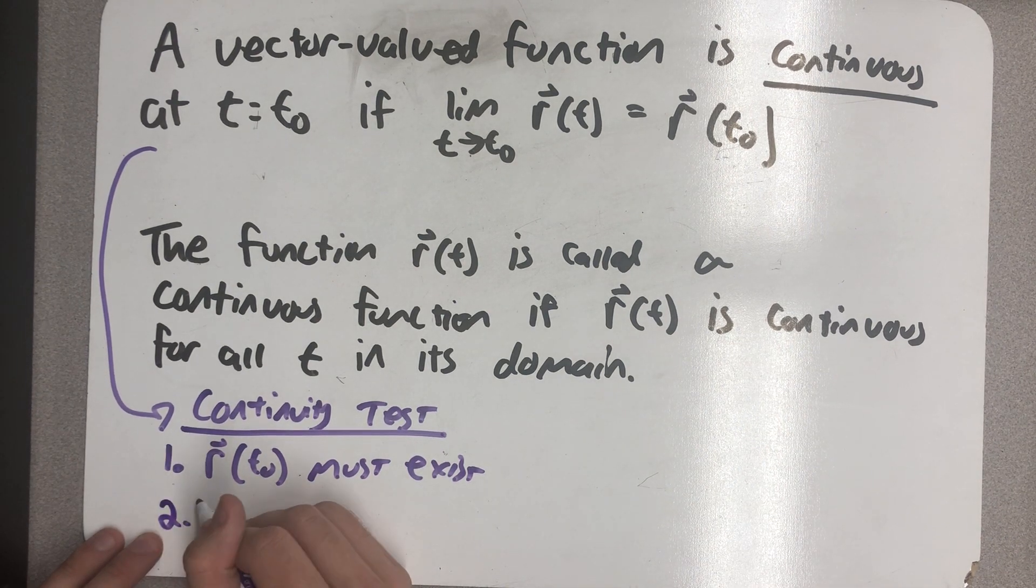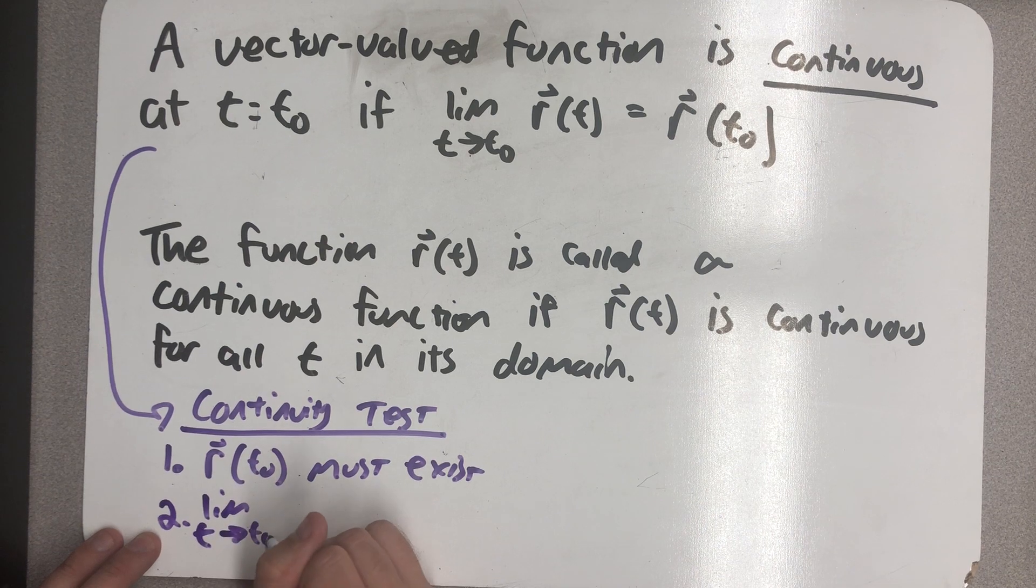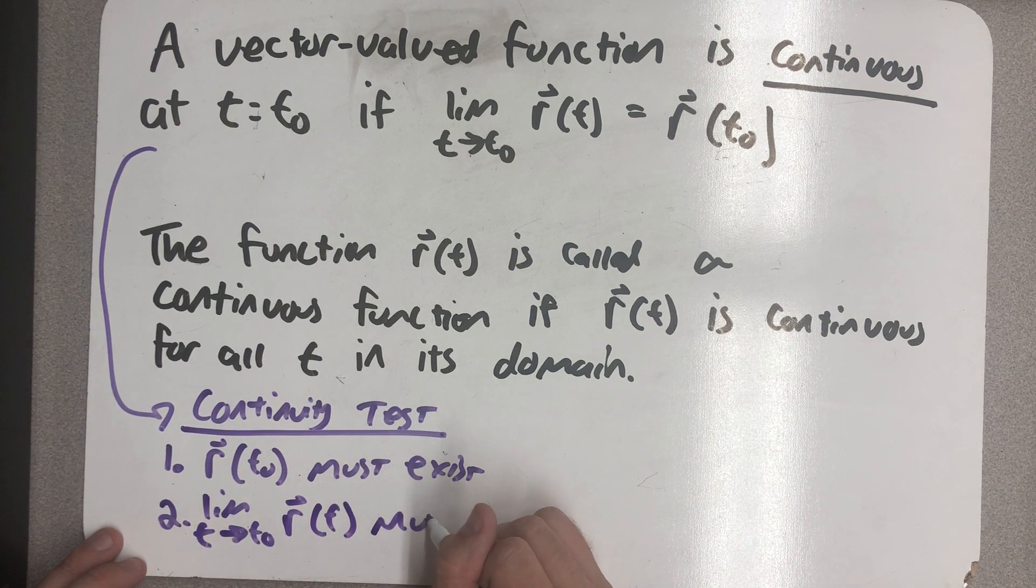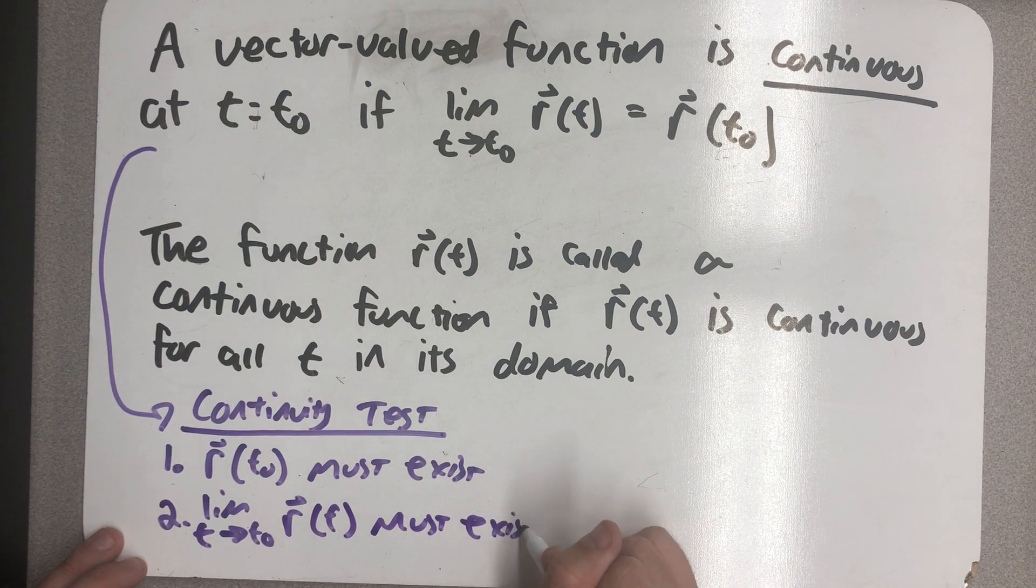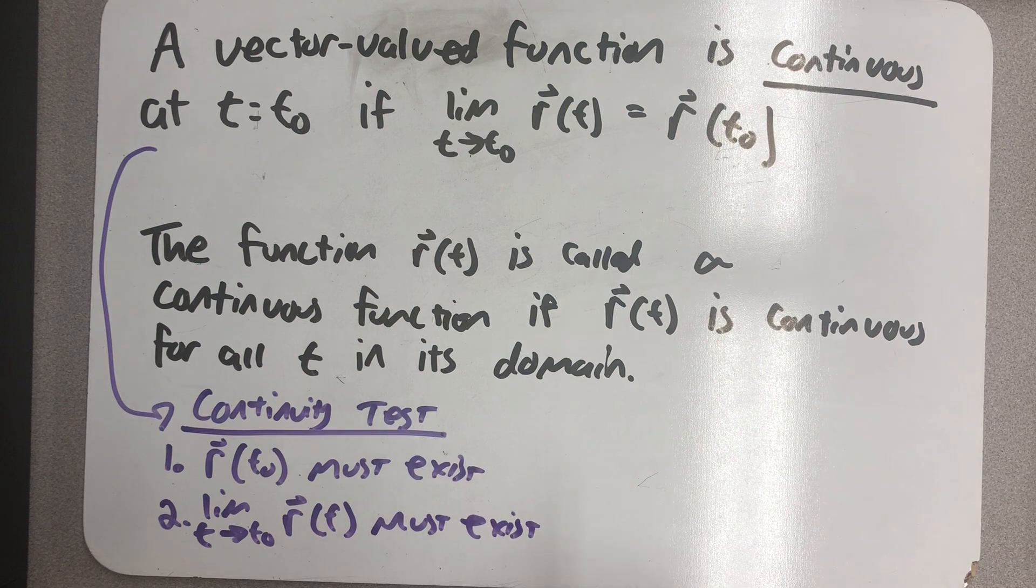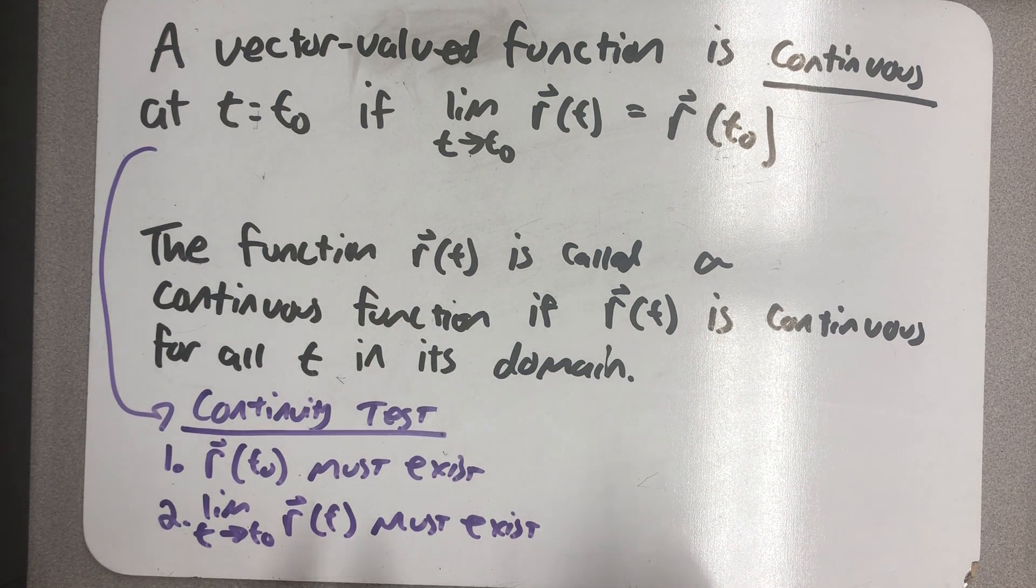Two, the limit as t approaches t-naught of r of t has to exist. And again, that means all three scalar functions limit as t approaches t-naught has to exist.